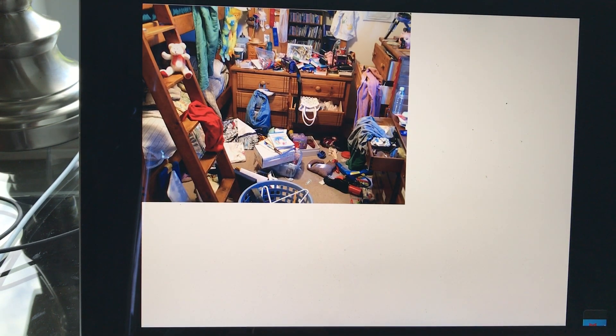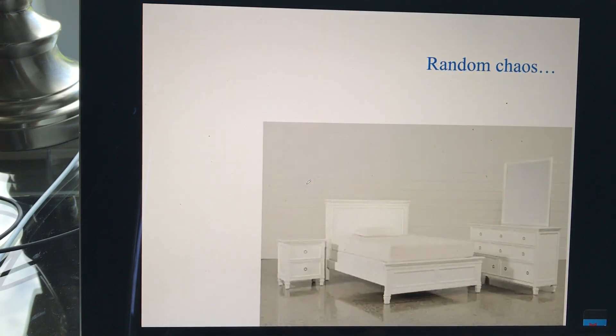So we have something that's not ordered - we have random chaos. And we could have something that actually is ordered. And we see that we prefer this environment much more for us.